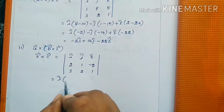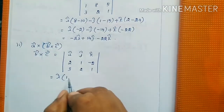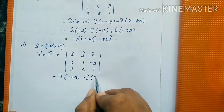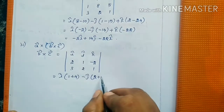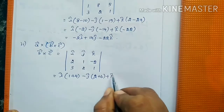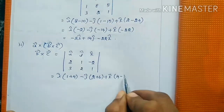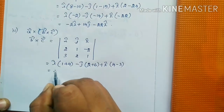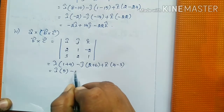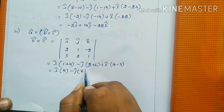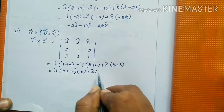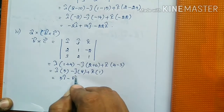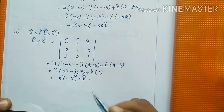This gives î(5), minus ĵ(8), plus k̂(1). So B×C = 5î - 8ĵ + k̂. Next we have to find A×(B×C).